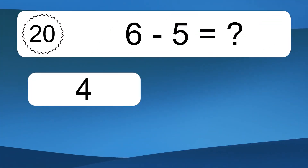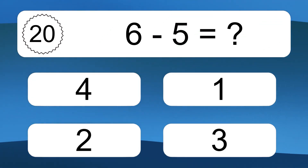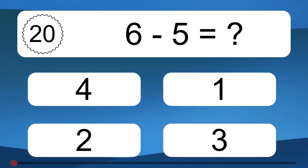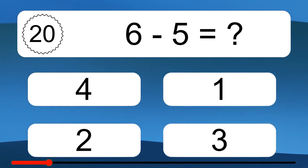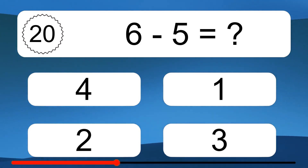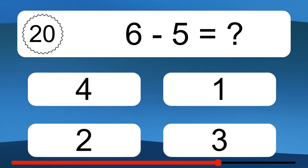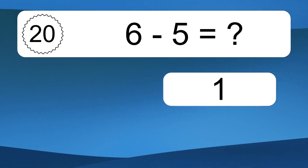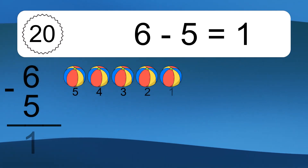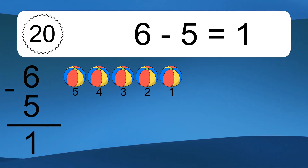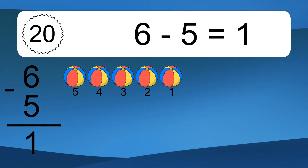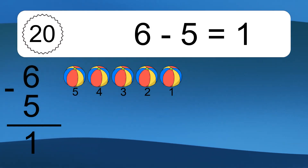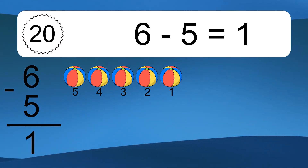6 minus 5 equals what? 6 minus 5 equals 1. Let's count it: 5, 4, 3, 2, 1.